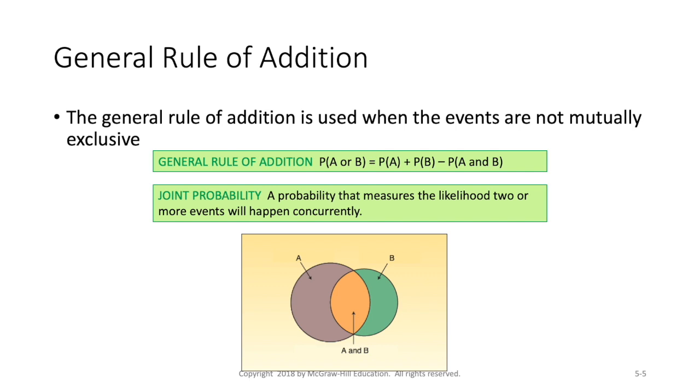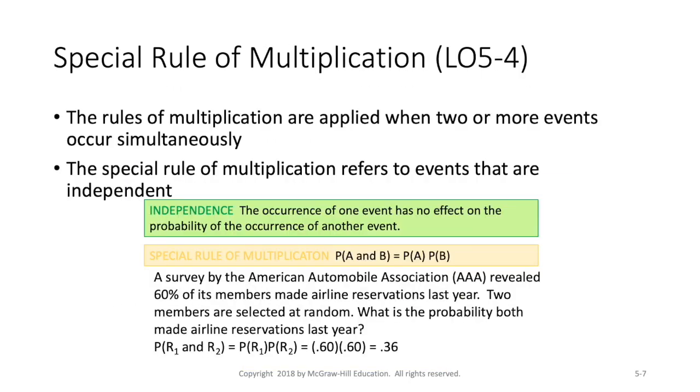And so this is a matter of joint probability. And so now we have to adjust our formula slightly. So we're still going to look at the probability of A and we're going to add to that the probability of B occurring. But now we have this new piece. We are going to subtract out the probability that both A and B occurred. Why? Because we want to avoid double counting.